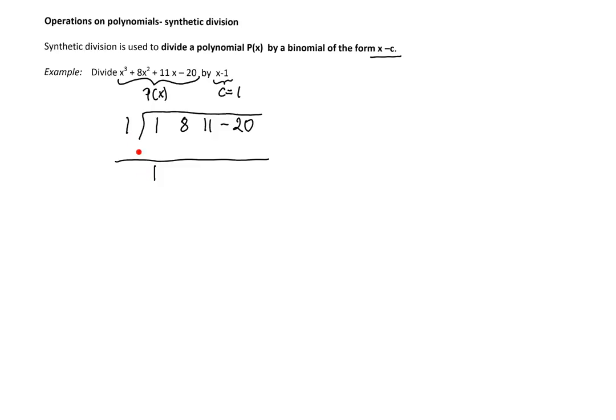Next, we'll multiply c by that number in the position under the horizontal line. So 1 times 1 is 1 and we'll write it in the second column under the second coefficient. So that's going to be 1. At this point, we'll add those two numbers and write it below the horizontal line, and that is 9.